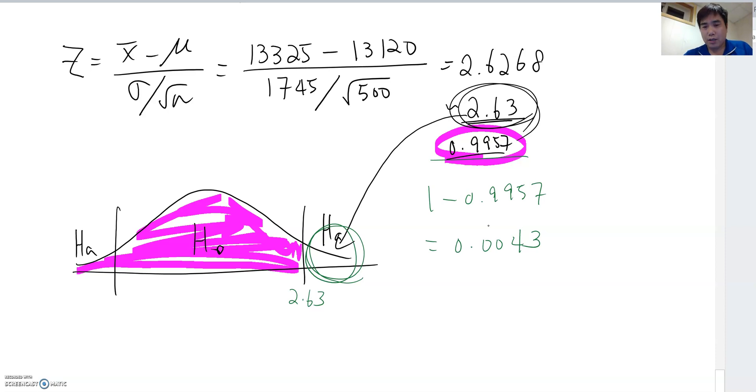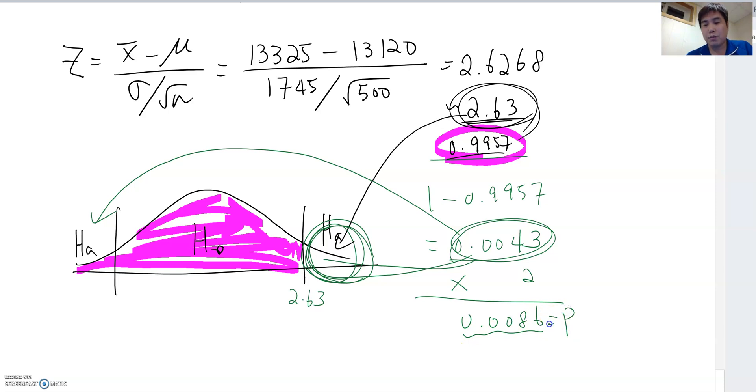Now again, the last time we did a two-tail case, we assume this value always represents one part of that. This will only indicate the right side here. But we also assume this may be on the left side again. So you times 2. And this becomes 0.0086. That will be your p-value here, basically.